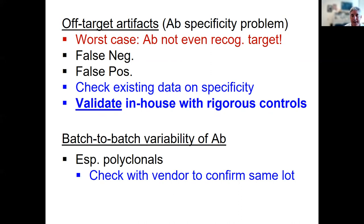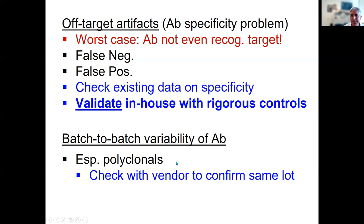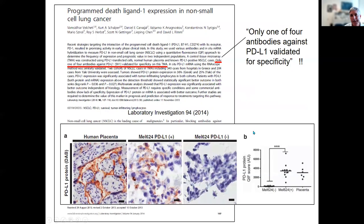There is also batch-to-batch variability: you may have a validated antibody that works fantastically, then run out and order another lot — and it doesn't work the same way. This is especially a problem for polyclonals, since they are made in animals and when the stocks of a particular lot run out, a new animal must be immunized. The antibodies generated in that new animal are not necessarily going to behave the same way. If consistency matters, check that the vendor can supply the same lot, or stock up on it upfront.